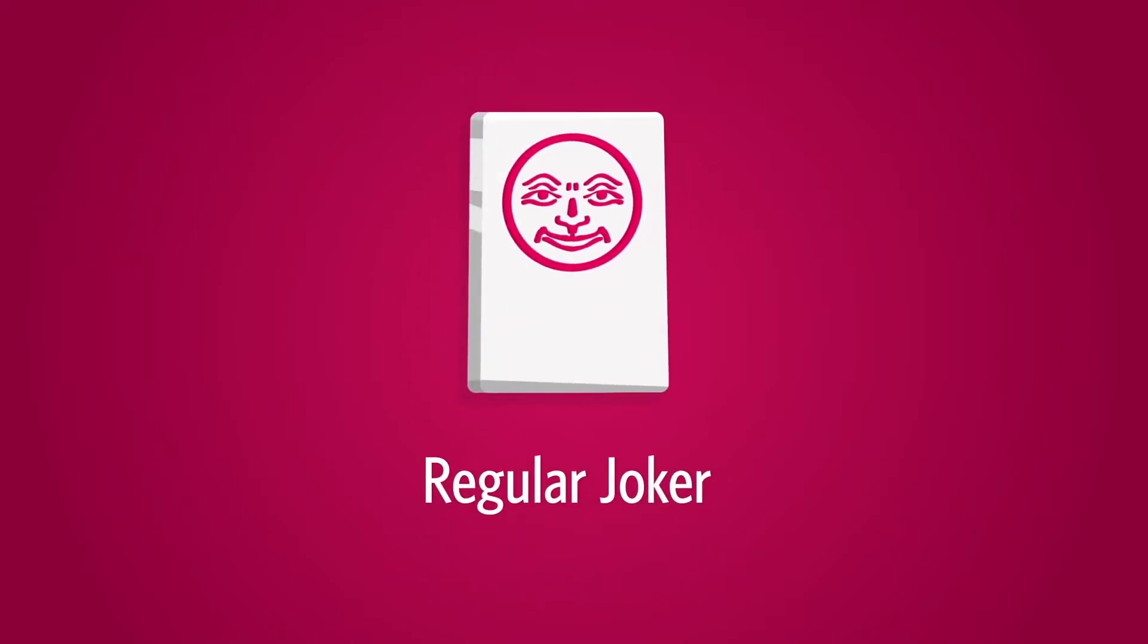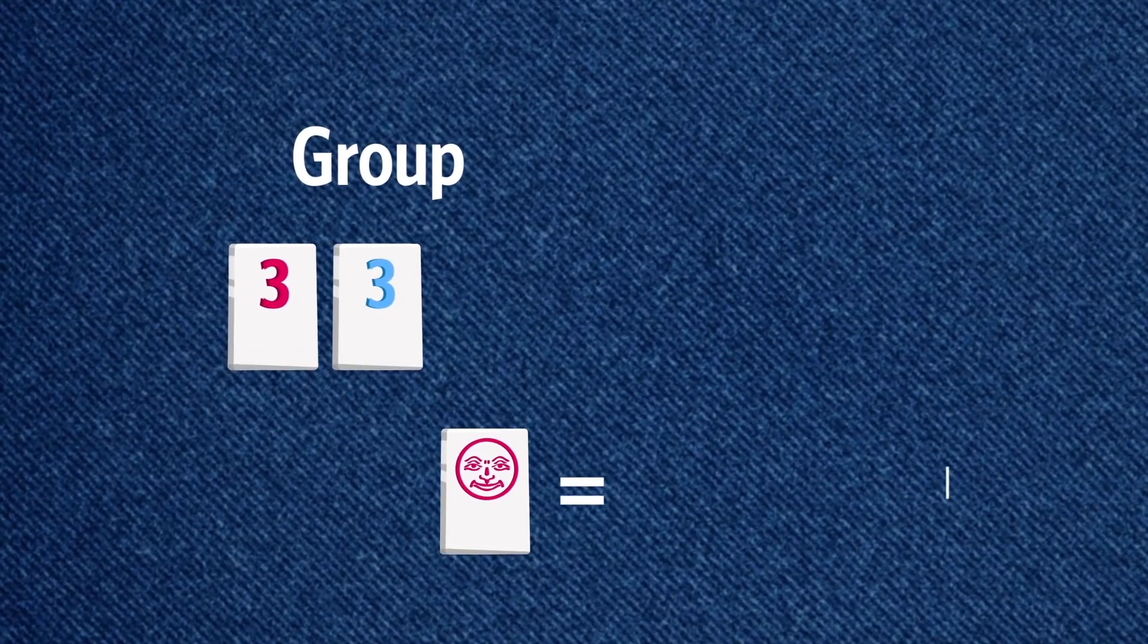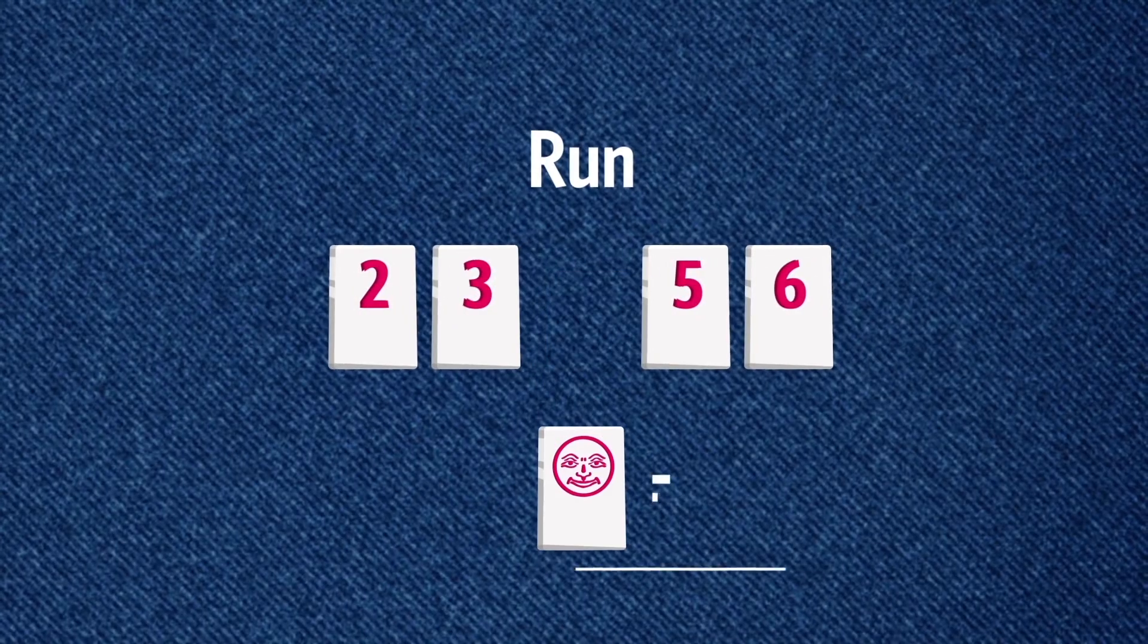Regular joker. You can use the joker in sets of runs and groups. Group: the joker represents black three or yellow three. Run: the joker represents red four.